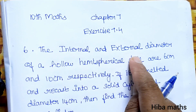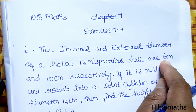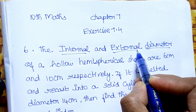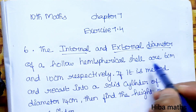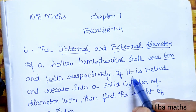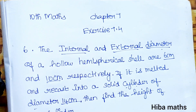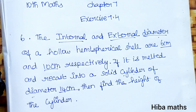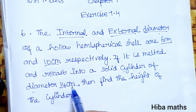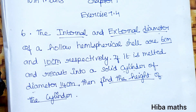The internal and external diameter of a hollow hemispherical shell are 6 cm and 10 cm. If it is melted and recast into a solid cylinder of diameter 14 cm, find the height of the cylinder.